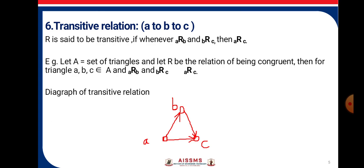Transitive Relation: if A is related to B and B is related to C, then A is related to C. R is said to be transitive if, whenever A is related to B and B is related to C, then A is related to C. Let A be a set of triangles and let R be the relation of being congruent. Then for triangles A, B, C belonging to the set, if A is related to B and B is related to C, therefore A is related to C. From the digraph, A is related to B, B is related to C, so A is related to C.